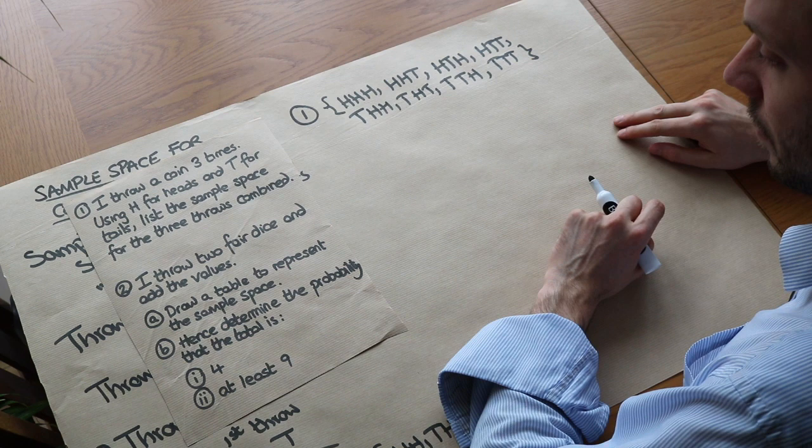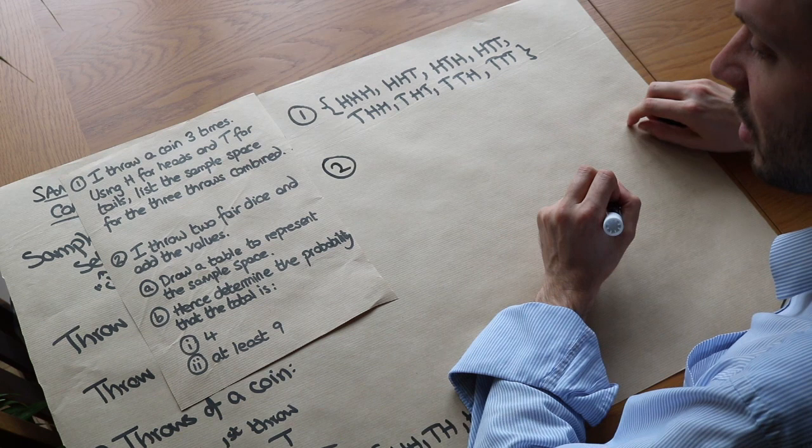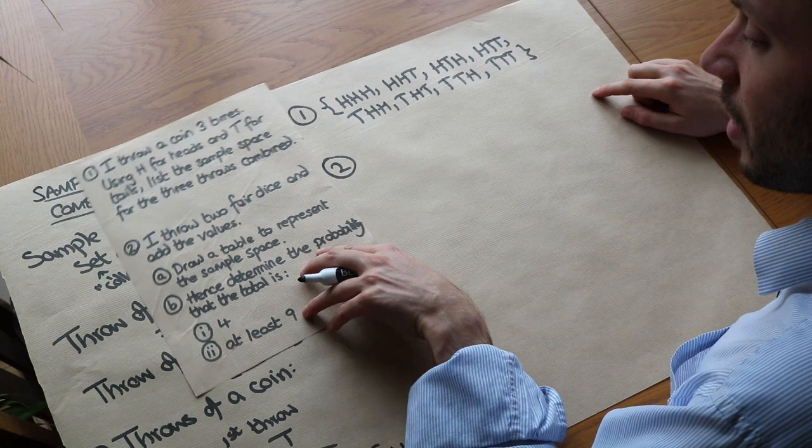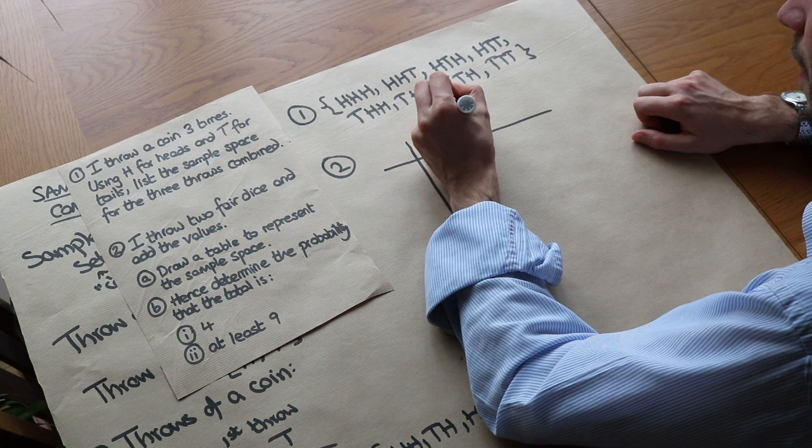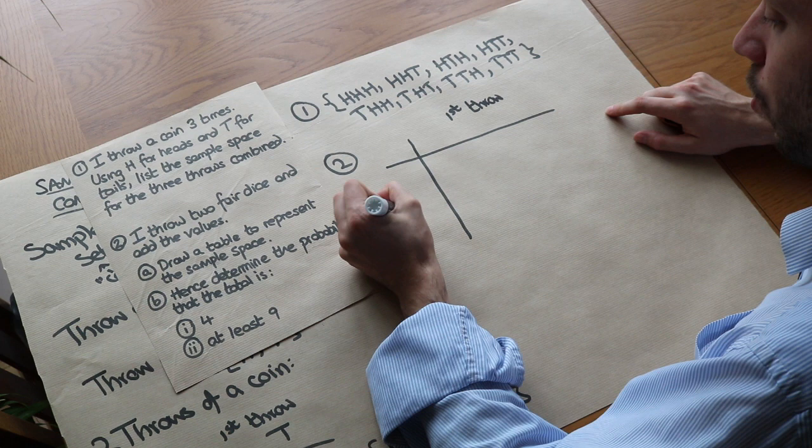Now you have to combine the outcomes numerically. So this is quite a common question, particularly in GCSE papers. I throw two fair dice and add the values. Draw a table to represent the sample space. So if we do a table. Now a table is particularly good when we've got two different things going on. So we've got two fair dice. So I'm going to have the first throw here and I've got the second throw here.